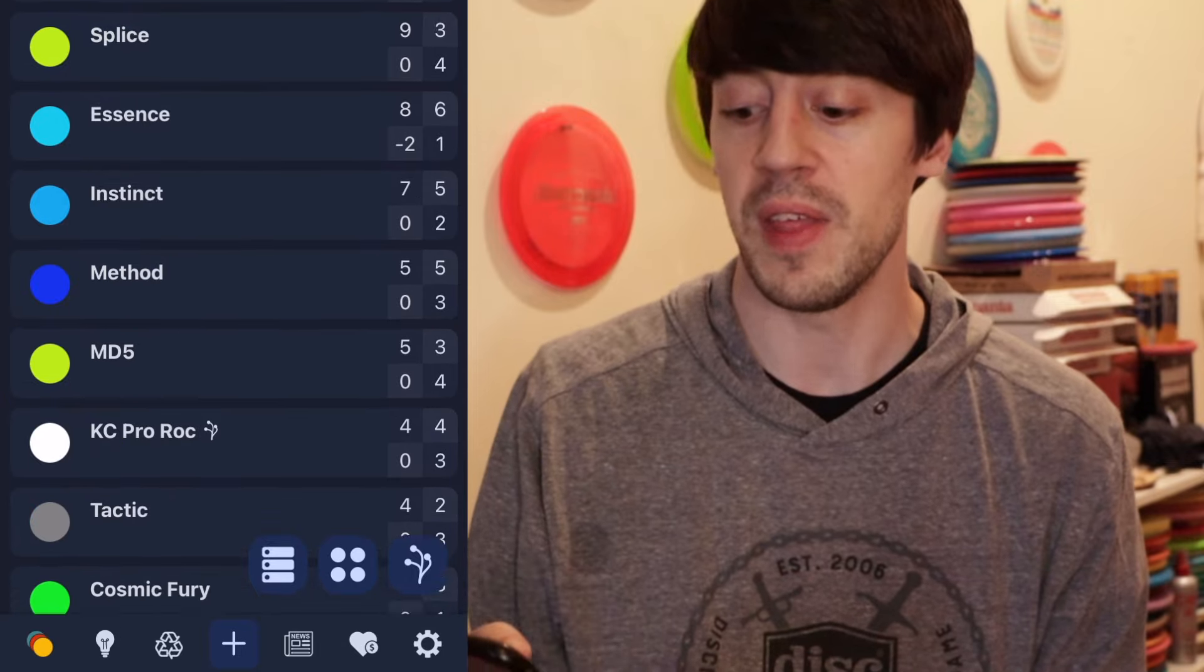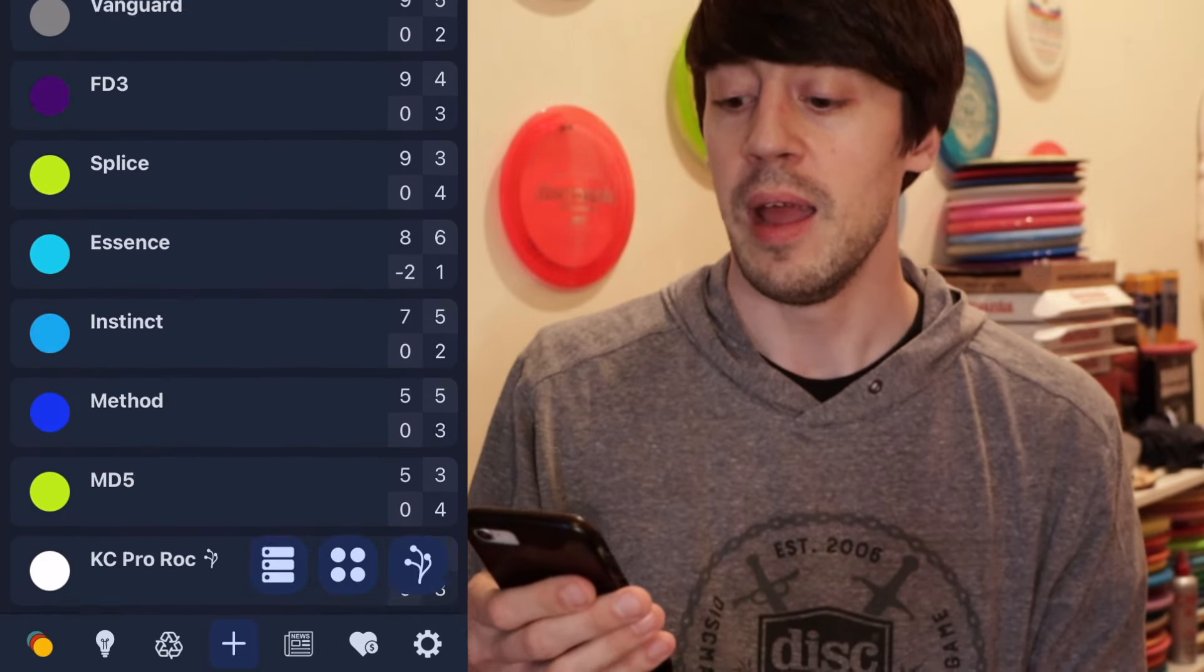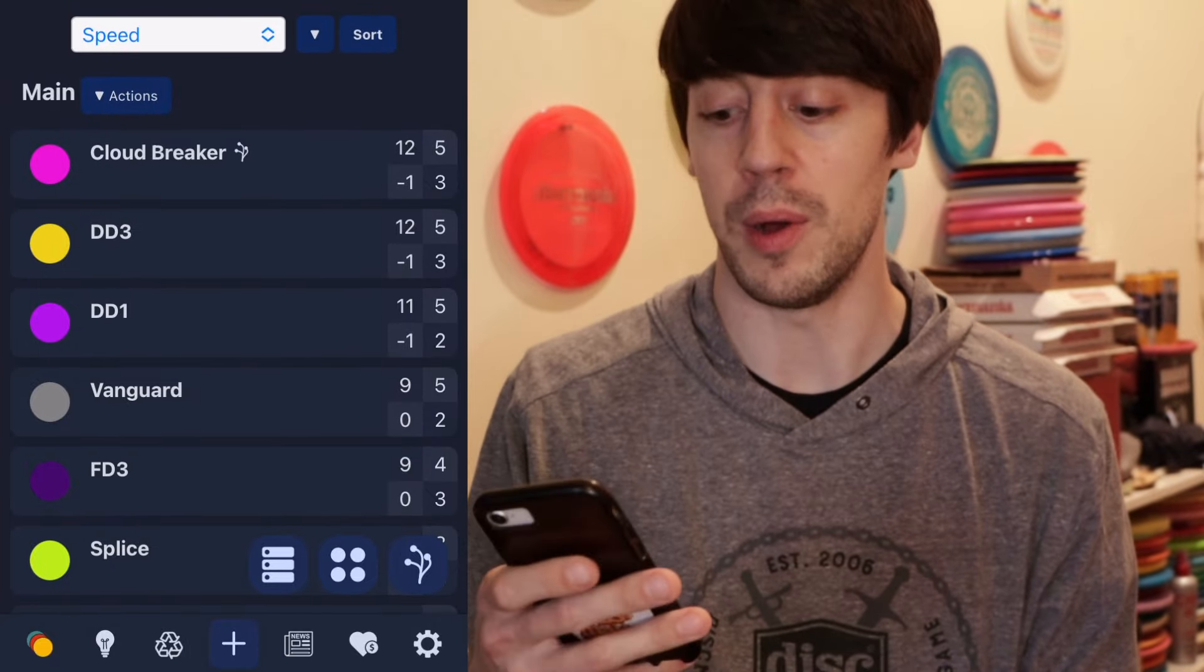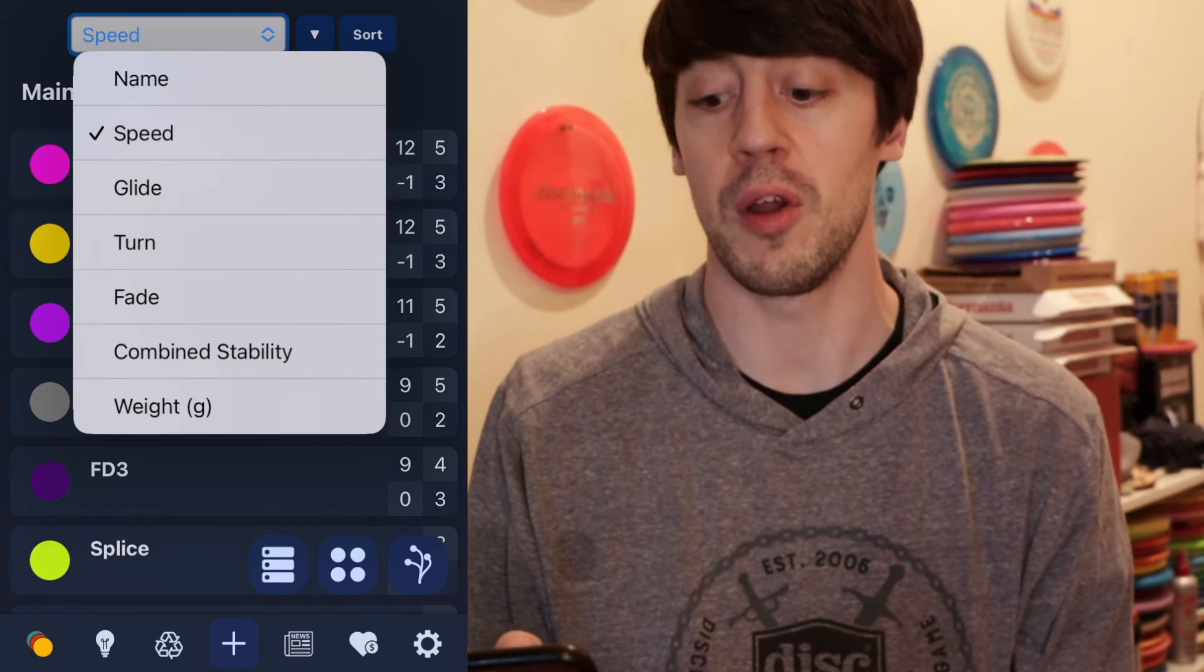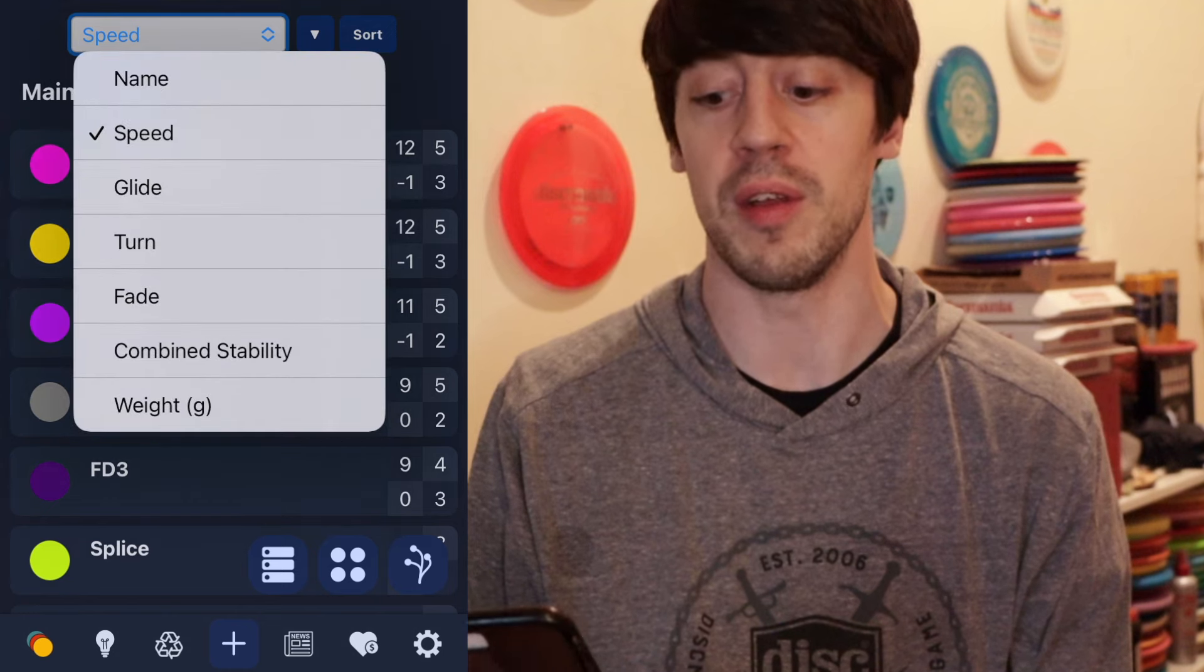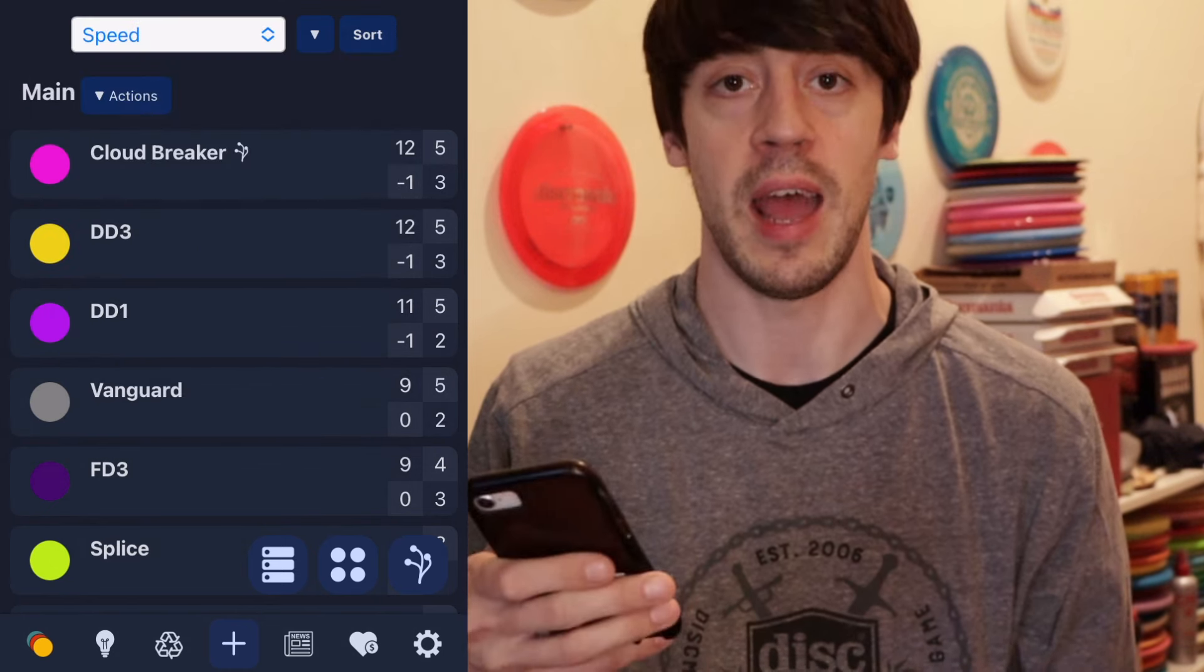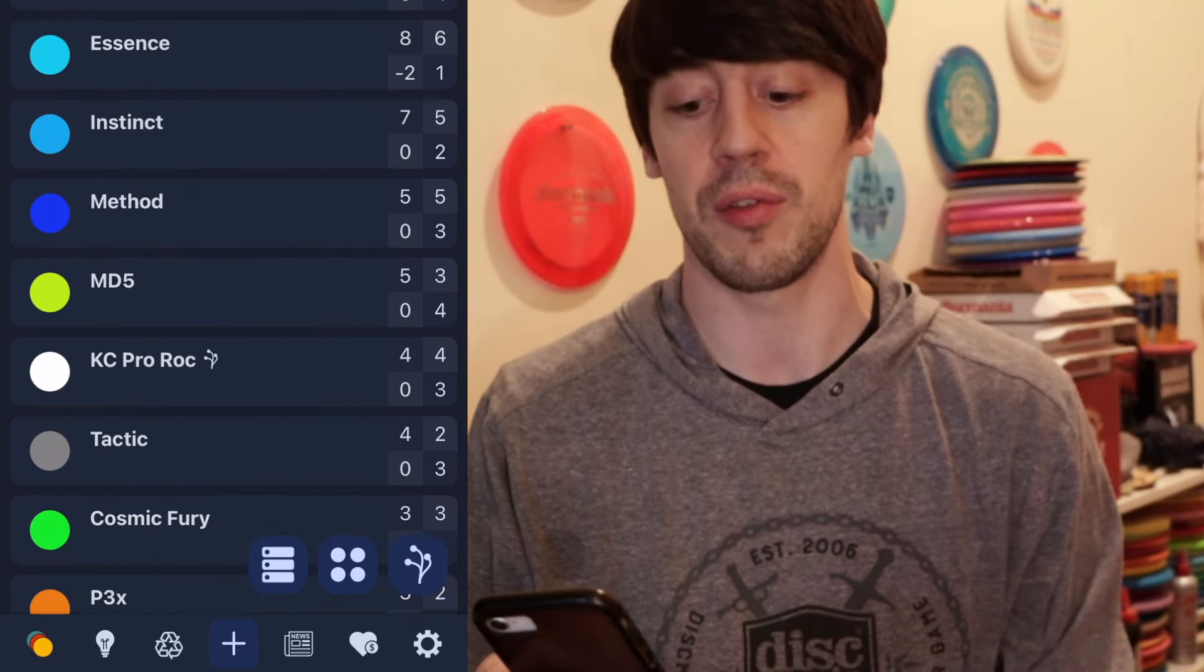Getting into my account here you can see that I already have all my discs in my bag loaded into the app. And there's a couple different tabs and a couple different selections that you can use along the bottom. Right now I'm just in the grid selection so you can see at the top it's determined by speed. But you can also change it to glide, turn, fade, and it would just change the order that everything's in. But having it based on speed is an easy way to see how your disc kind of progress through your bag.